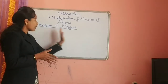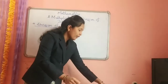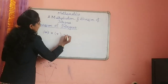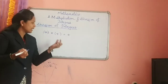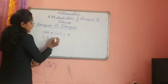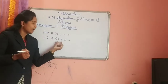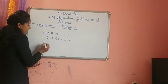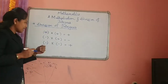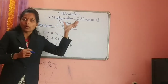Today we are going to learn division of integers. If you observe, the rules of multiplication and division are the same. Plus multiplied by plus gives plus. Minus multiplied by plus gives minus — that is, a negative integer multiplied by a positive integer gives a negative answer. And minus multiplied by minus gives plus, meaning both negative numbers give a positive answer. The same rules apply for division of integers.